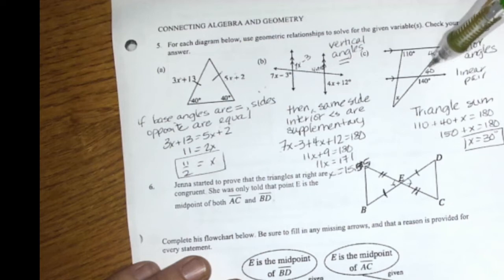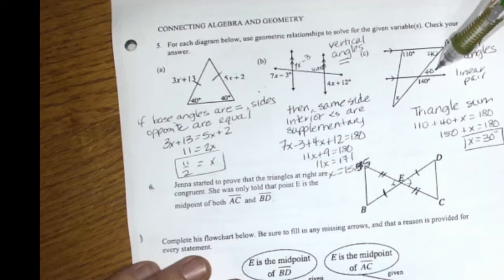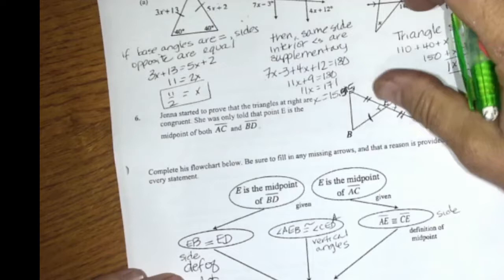This is all kind of review. Alternate interior angles. We know these are parallel lines. So alternate interior angles are the same. And linear pair right there is how she got the 40. And all three angles of a triangle add up to be 180.